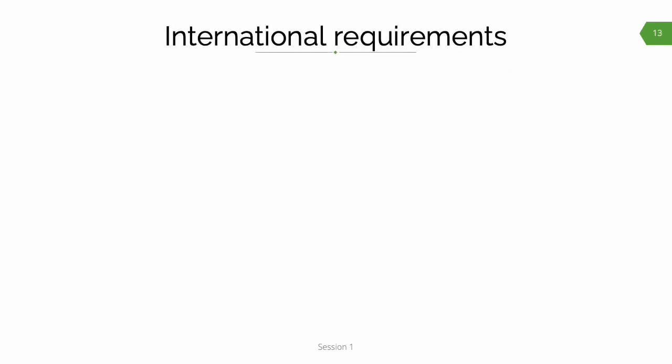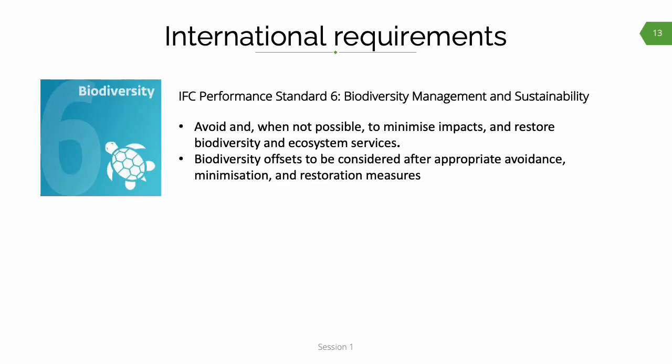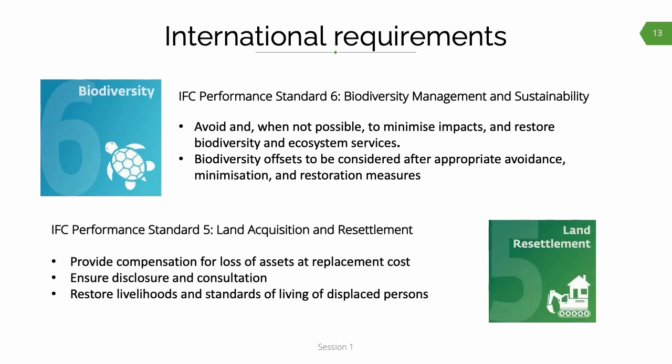Moving on to our international obligations in respect of the mitigation hierarchy — there are many different international environmental conventions and agreements to which South Africa is a contracting party that adopt a hierarchical approach or make explicit mention of the mitigation hierarchy, such as the Convention on Biological Diversity. Particularly relevant to EIA for internationally funded projects are the IFC Performance Standards, which convey the mitigation hierarchy requirements quite explicitly, particularly Performance Standard 6, which refers to the first three steps of the hierarchy and to biodiversity offsets — noting these should only be considered after application of the first three steps. Performance Standard 5 focuses on land acquisition and resettlement and also requires avoidance, minimization, restoration, and compensation.